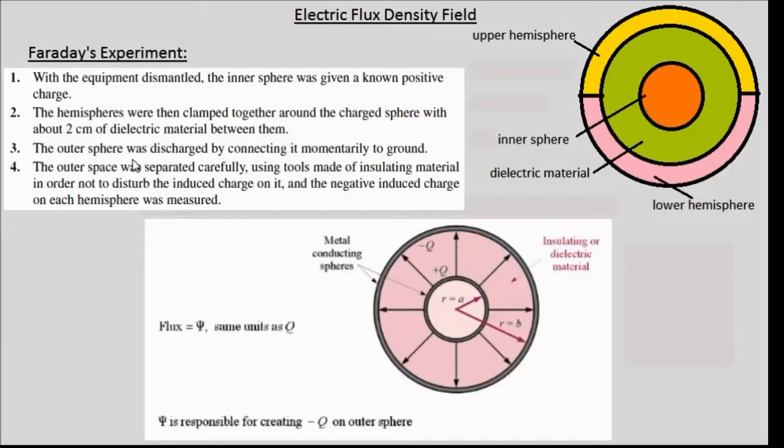The outer sphere was discharged by connecting it momentarily to the ground. The outer space was separated carefully using tools made of insulating material in order not to disturb the induced charge on it. And the negative charge induced on each hemisphere was measured carefully.